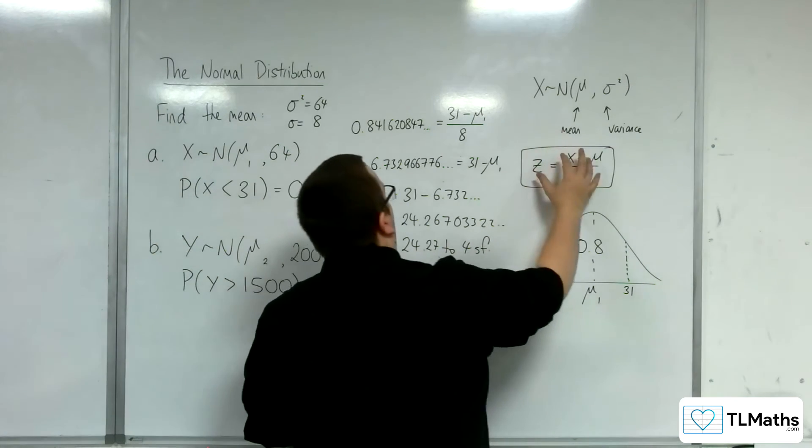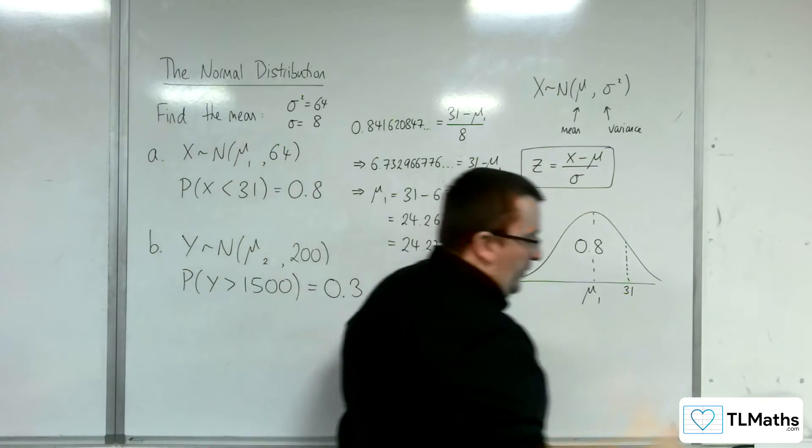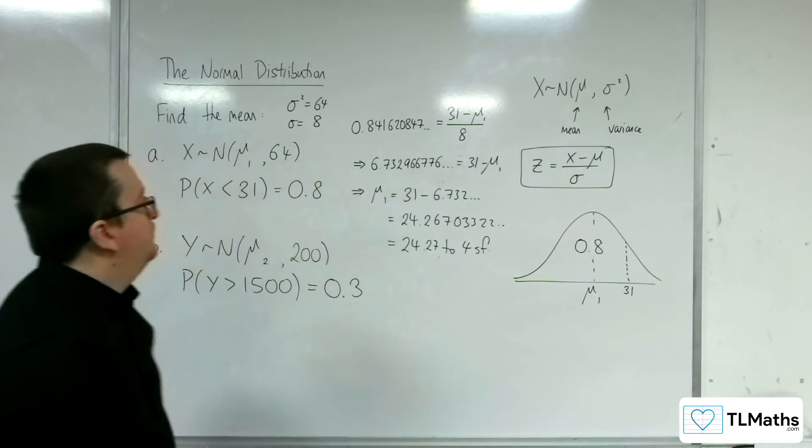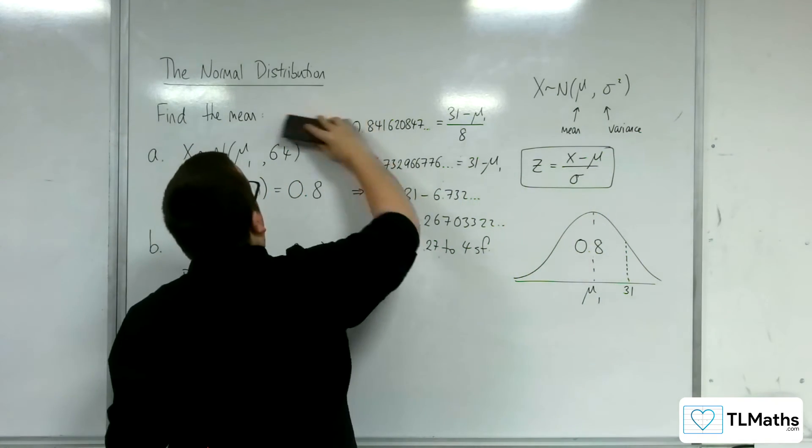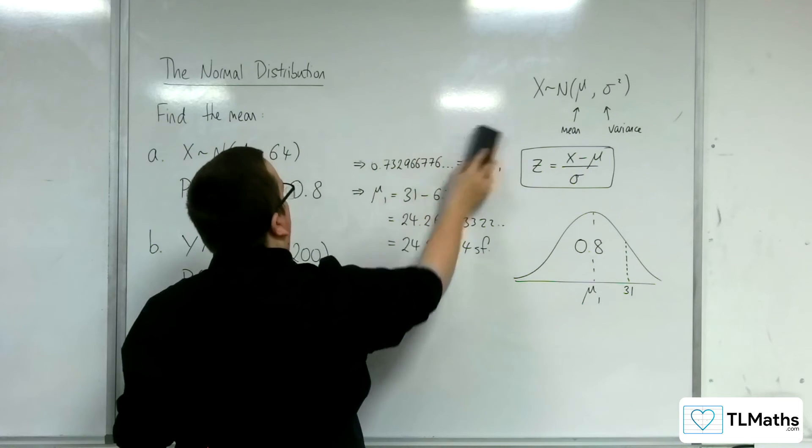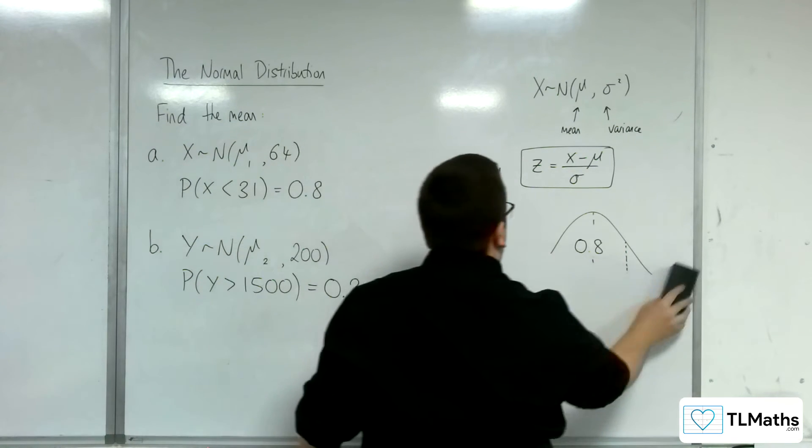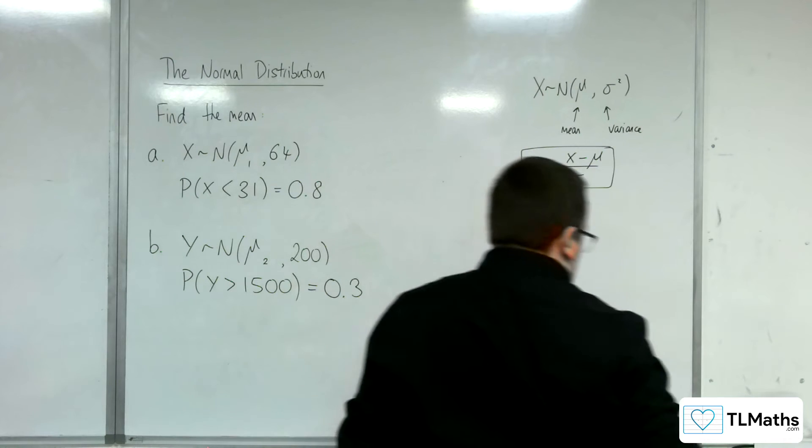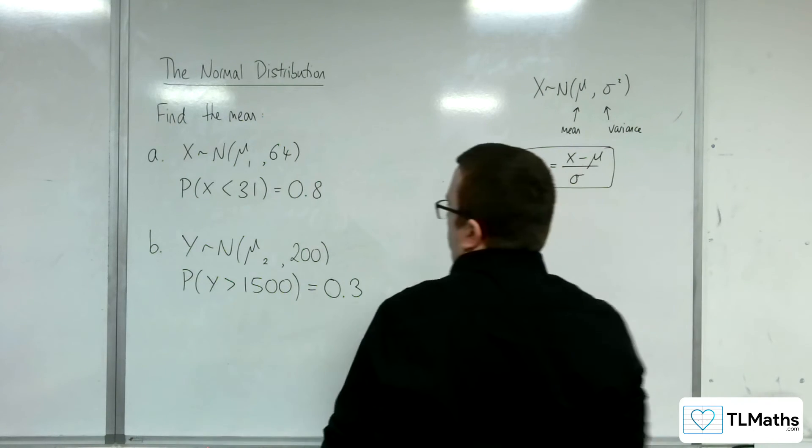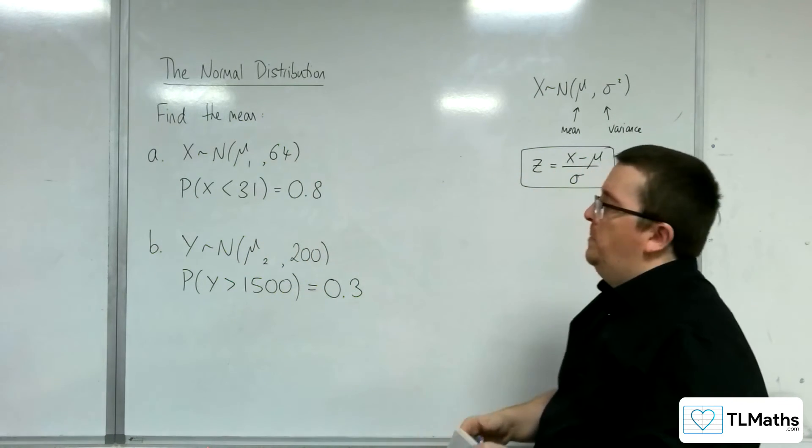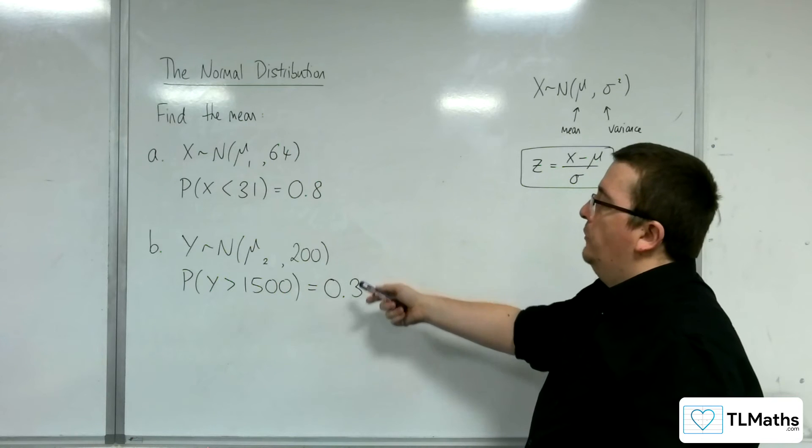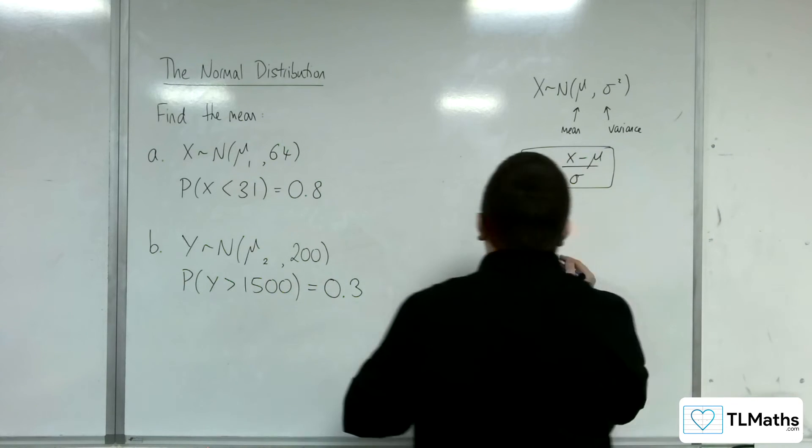We had to use the formula in order to get that result. Let's have a look at B. This time, Y is normally distributed with a mean mu2 and a variance of 200. So let's draw a diagram.